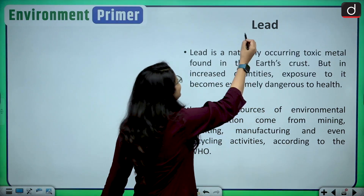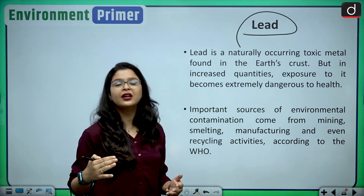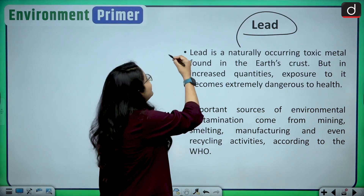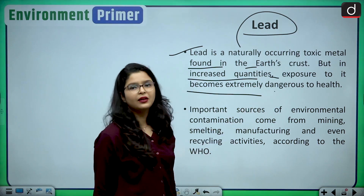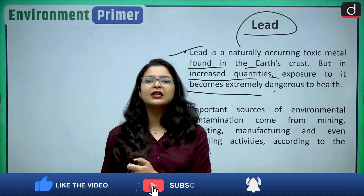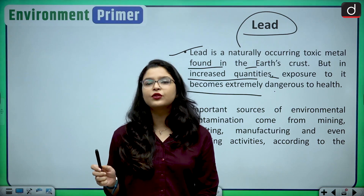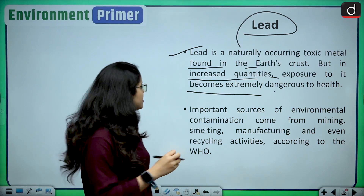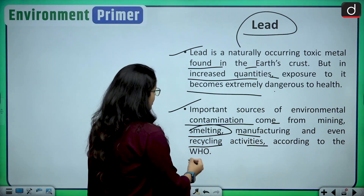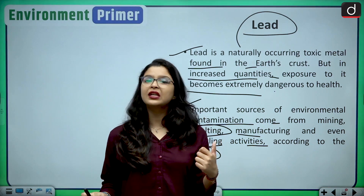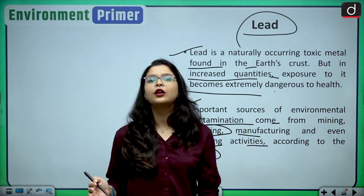Then we come to another pollutant: lead. Lead poisoning is very common in children because they have a tendency to absorb more lead than adults. Lead is a naturally occurring toxic metal found in the earth's crust, but in increased quantities exposure becomes very dangerous to health. Important sources of environmental contamination include mining, smelting, manufacturing, and recycling activities according to the World Health Organization.